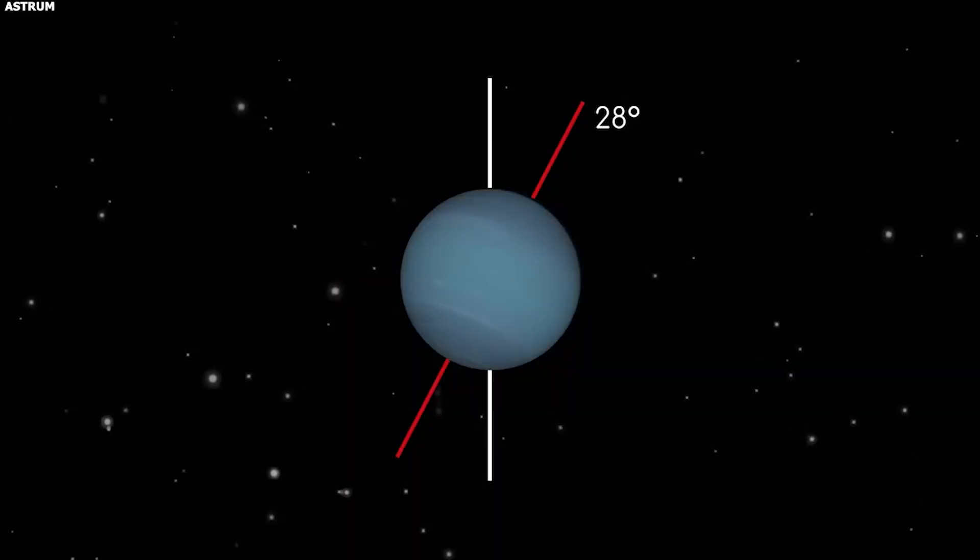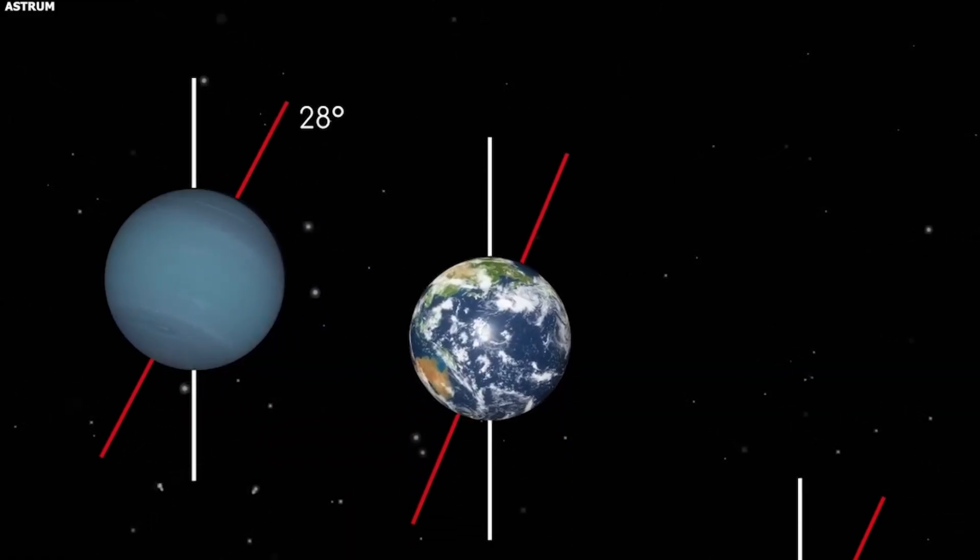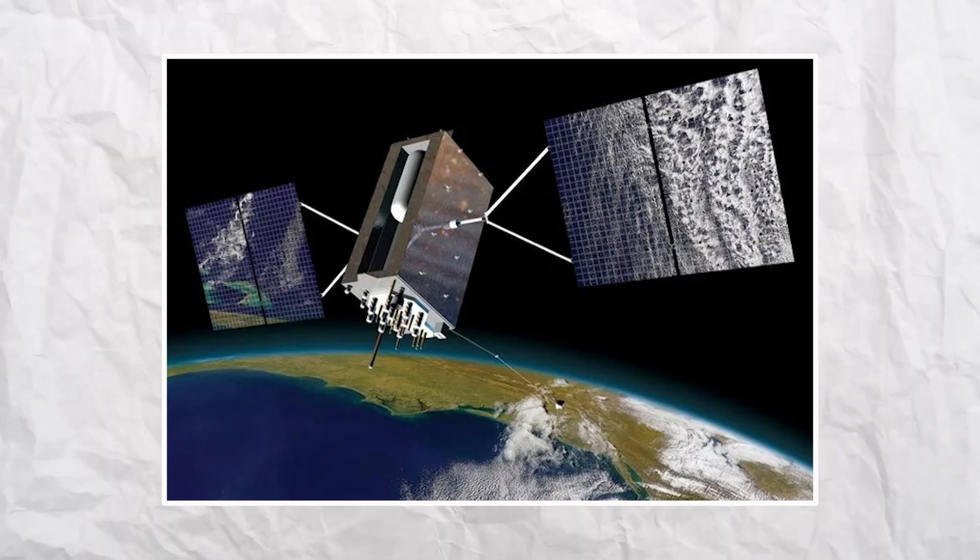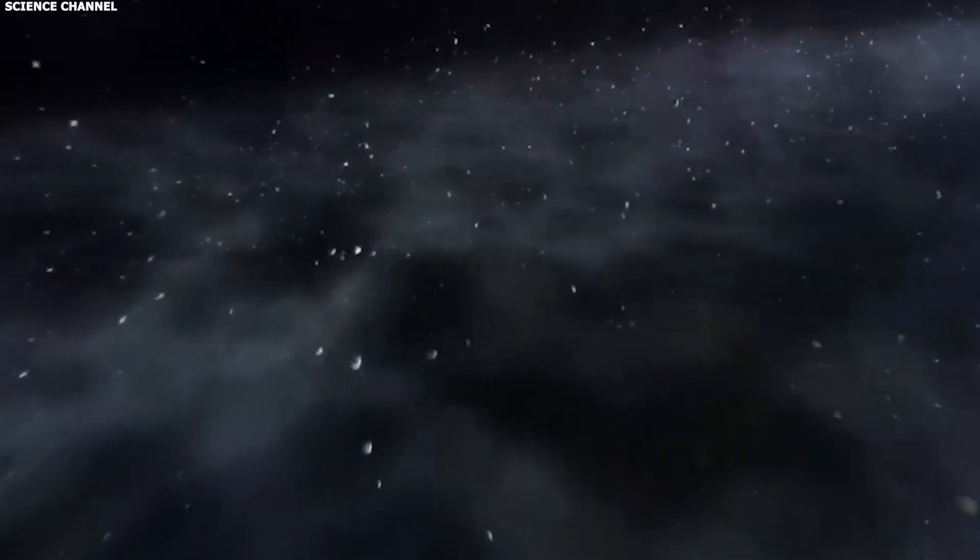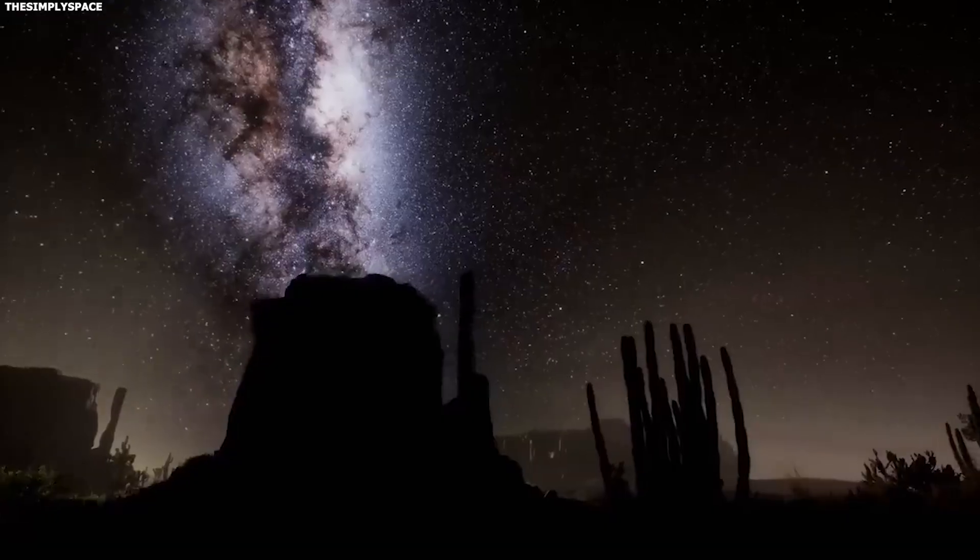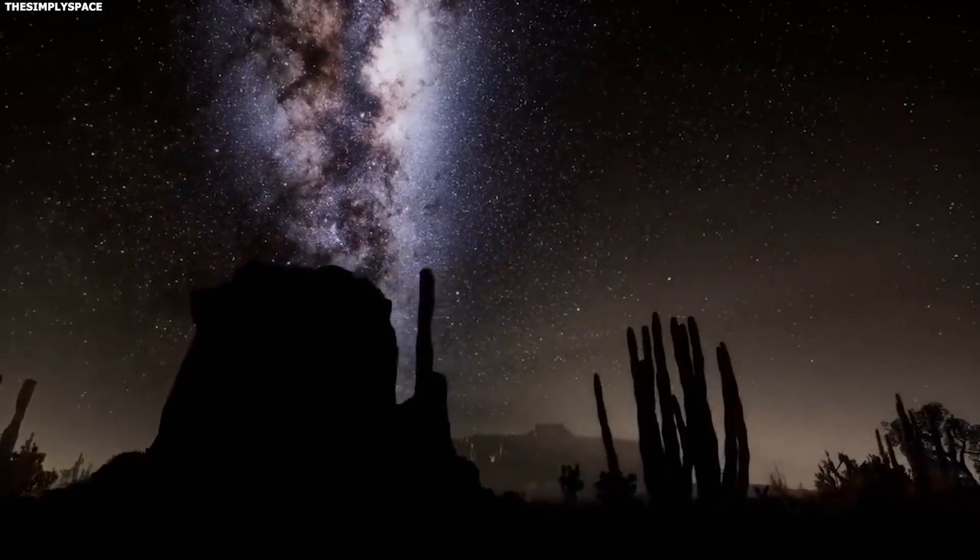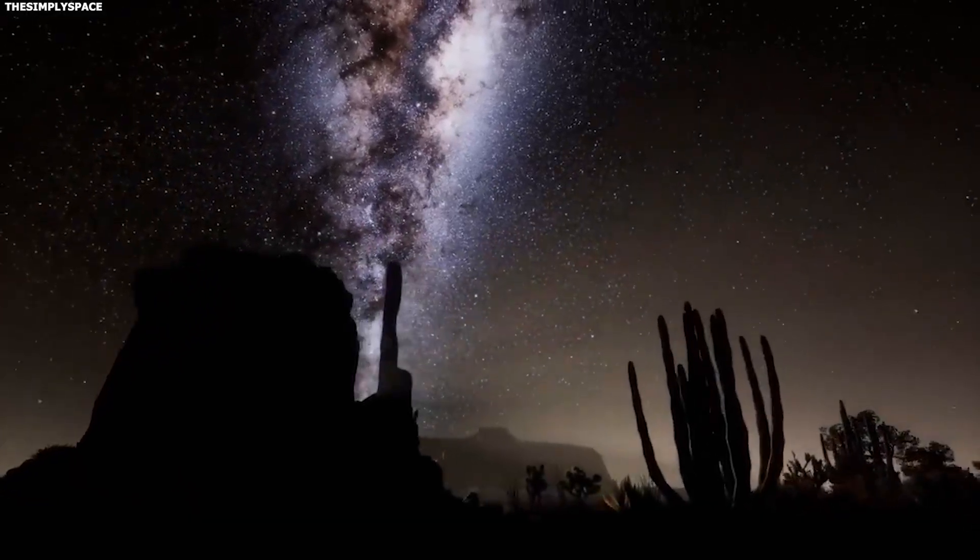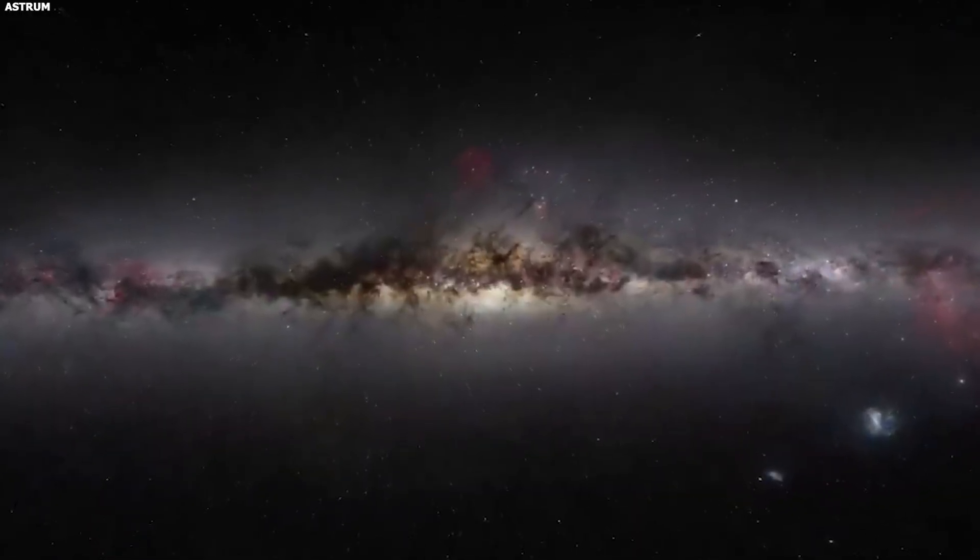General relativity also has practical applications we use every day. GPS satellites have to account for relativistic effects, or they'd give you directions that are miles off. The clocks on those satellites tick at a slightly different rate than clocks on Earth because of how gravity warps time. Without Einstein's equations, your phone couldn't tell you where you are.